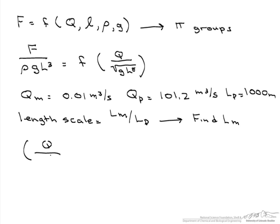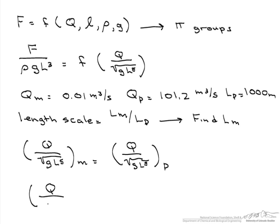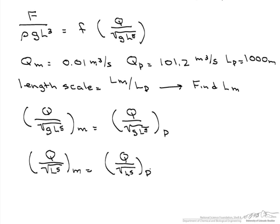So Q divided by the square root of g·L⁵ of the model equals Q divided by the square root of g·L⁵ of the prototype. Assuming gravity stays constant, we can simplify and write: Q_model divided by Q_prototype times the square root of L_prototype to the fifth equals the square root of L_model to the fifth.